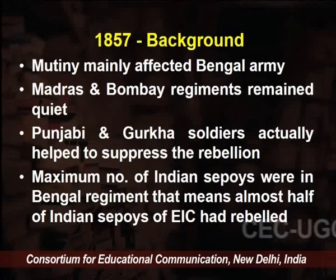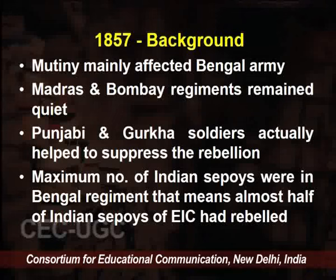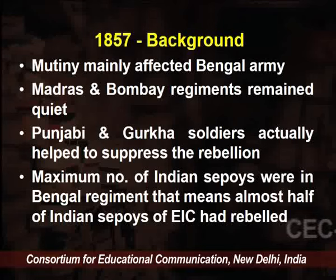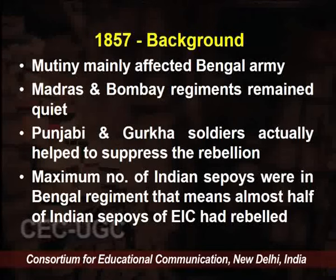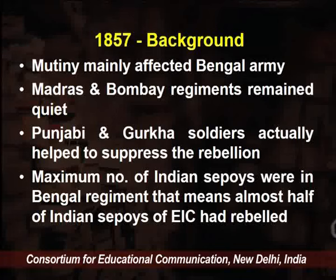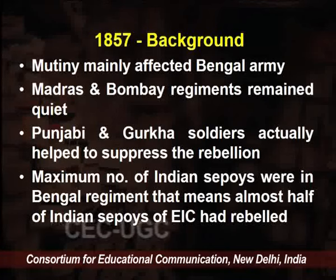The 1857 revolt found religion to be an important concern, as it was also during the Vellore mutiny. A soldier like Mangal Pandey was also instrumental in that sense — he initiated the revolt, and the British tried and punished him. When we try to understand the revolt of 1857, we find that the mutiny mainly affected the Bengal army, while the Madras and Bombay regiments remained quiet.